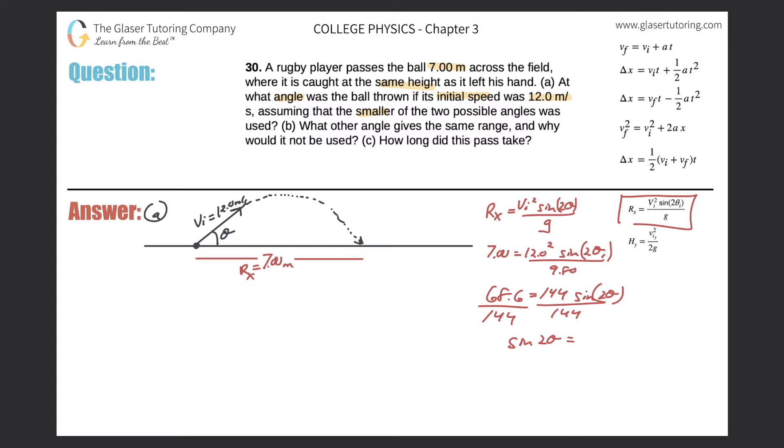68.6 equals 144 times the sine of 2θ. Divide out the 144, so sine of 2θ equals 68.6 divided by 144, and we get a value of 0.476. This is the point at which I can explain why we have two answers.